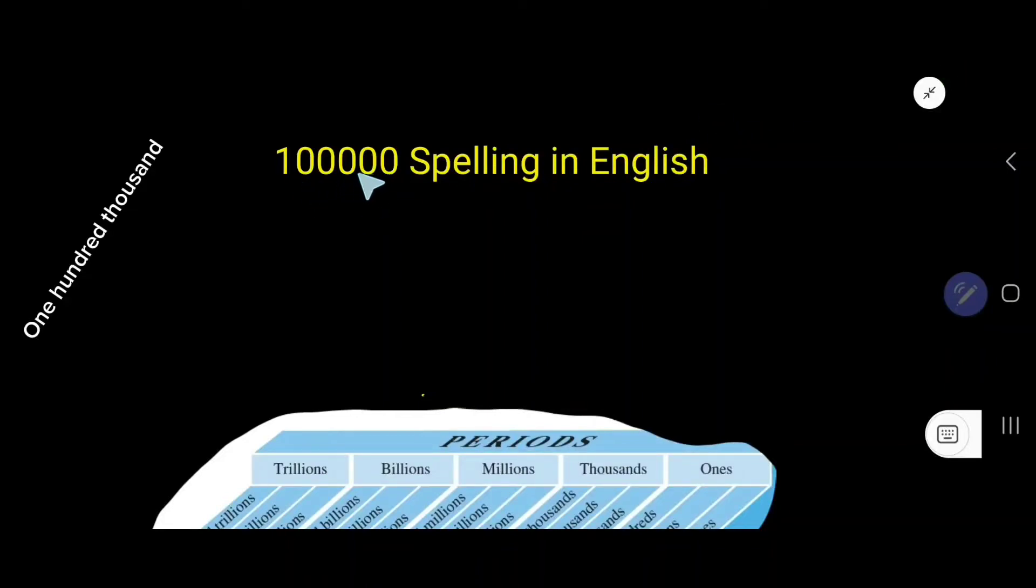100000 spelling in English. This number is spelled as one hundred thousand. Let me write the spelling, then I will explain this.